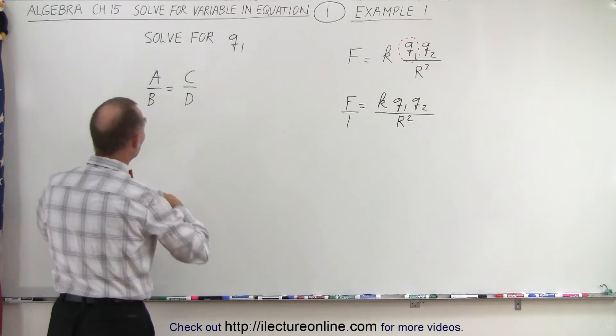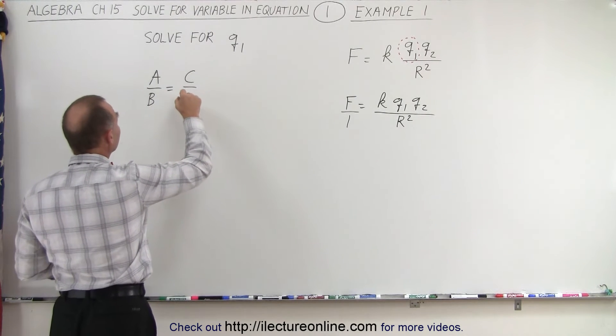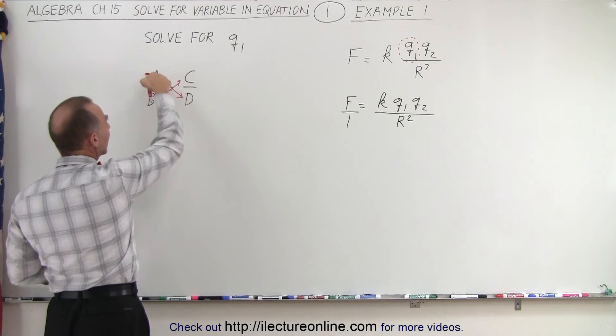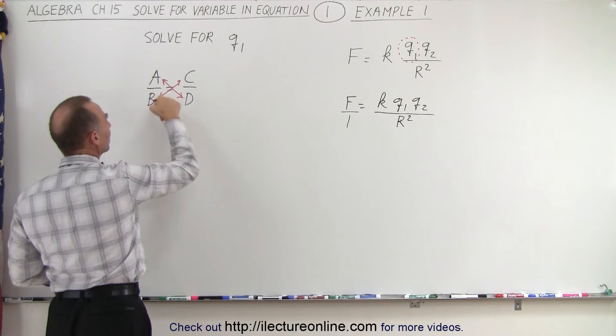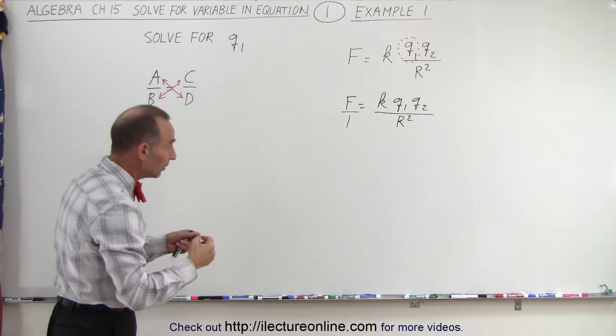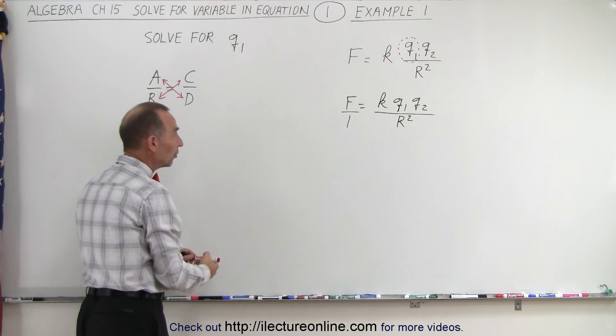And then we should realize that we can move everything in a diagonal sense. In other words, when we have two fractions that are equal to each other, we can move the A down here, the C down here, the B up there, and the D up there. So we can move things around along the diagonal, and nothing changes in the fractions.